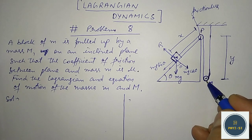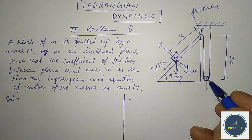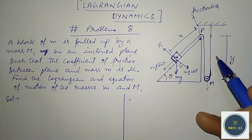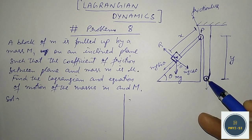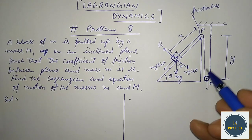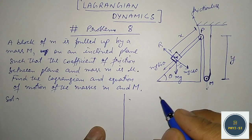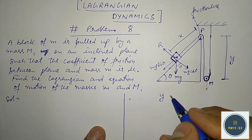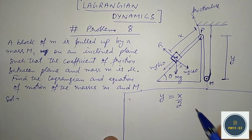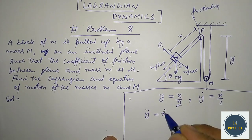When this pulley moves downwards, the distance moved by the pulley will be equal to half the distance moved by the small mass. If the pulley moves down by y, then x must be 2y. So from this we can write y = x/2. This is a very important relation. Therefore, y-dot = x-dot/2, and y-double-dot = x-double-dot/2.